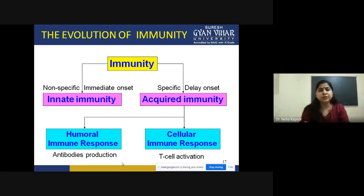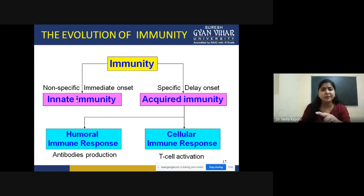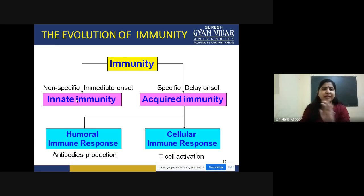Scientists reported that there are two branches of immunity: innate immunity and acquired immunity. Innate immunity is nonspecific — it is the immunity that a person harbors from the time of birth, because it is a natural immunity with an immediate onset. Acquired immunity is the immunity we acquire during our lifetime; it is quite specific because in response to a particular infection, our body prepares a specific immune response, but the onset is delayed.